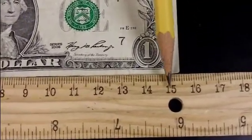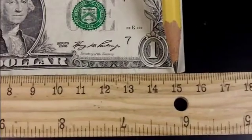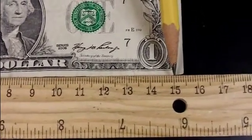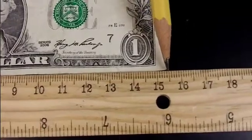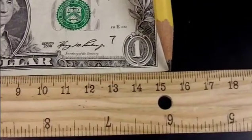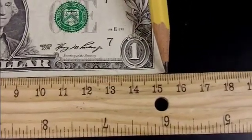Again, here is the 15 centimeter mark. Each one of these are tenths. One, two, three, four, five. The dollar bill measures 15.5 centimeters long.